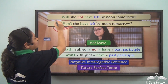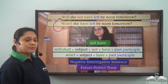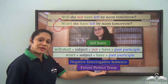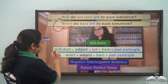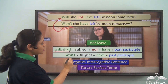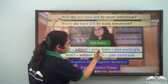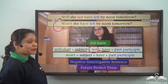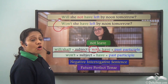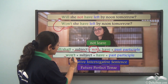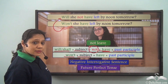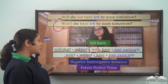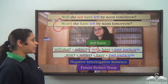So negative interrogative sentences portraying the future perfect tense can either be written as 'will' or 'shall' followed by the subject, followed by the negative word 'not', then the auxiliary verb 'have', and then the past participle. Remember, we never use the contracted form of 'shall not'.